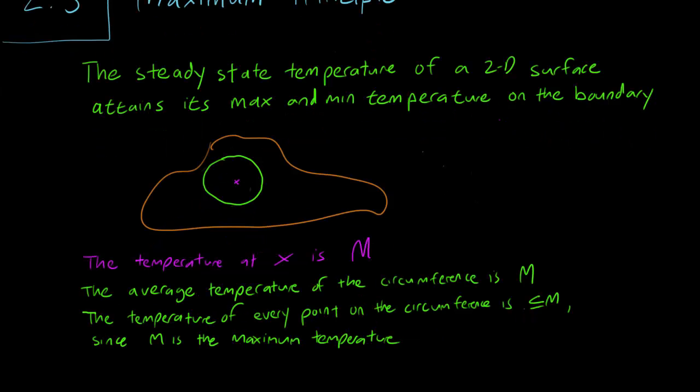But note that M is the maximum temperature, so the temperature at every point on the surface, including the points on the circumference, have to be less than or equal to M. That's what maximum means after all.